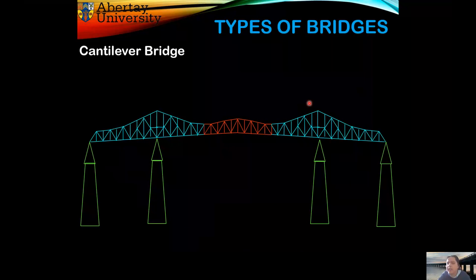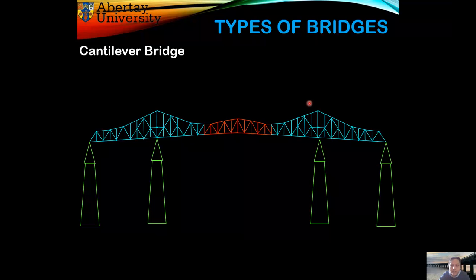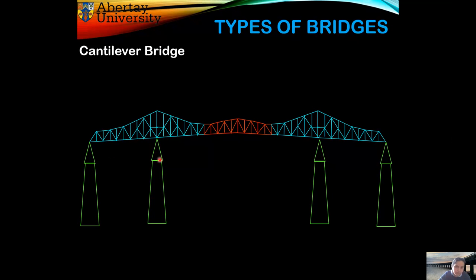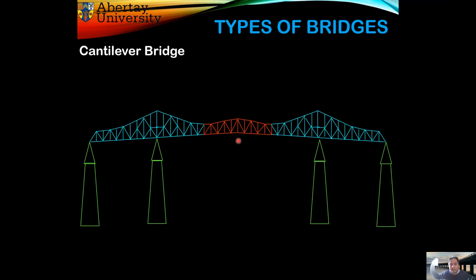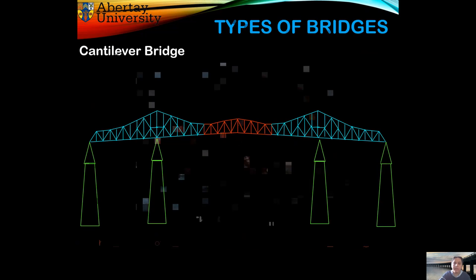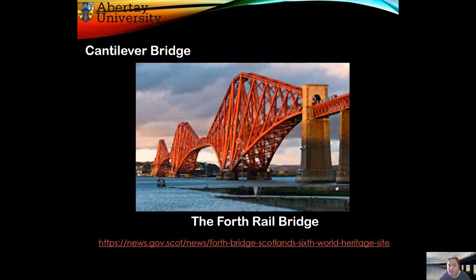A slightly fancier type of bridge is called a cantilever bridge. In this case, you'll have this section of the bridge fixed, this section fixed, and the middle section hanging in between the two fixed parts — that's why it's called a cantilever bridge. The Forth Rail Bridge in Edinburgh is one of the most famous examples of this type.